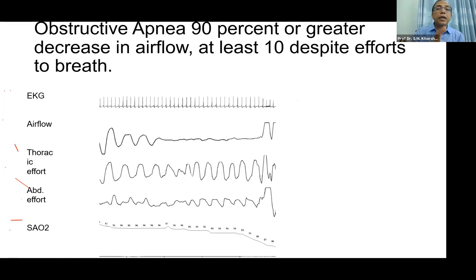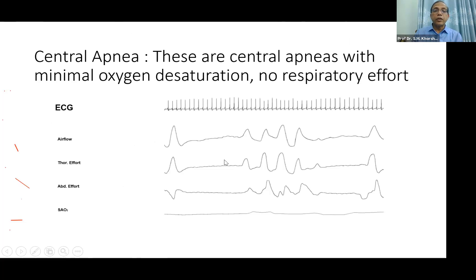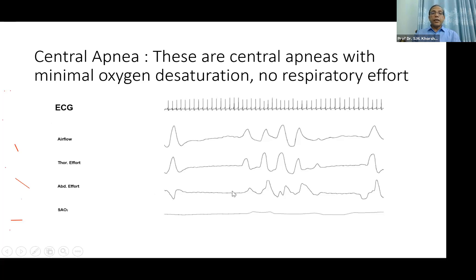In obstructive sleep apnea, in the graph there is no airflow but there is thoracic movement and abdominal movement. In central apnea, there is no abdominal movement, no airflow to the nose, no thoracic effort, and no abdominal effort.